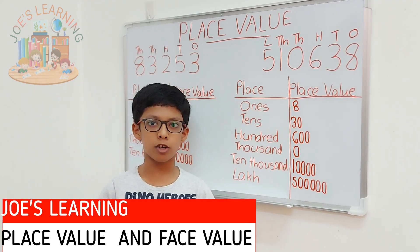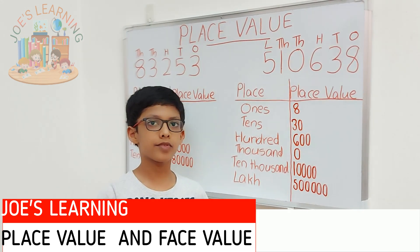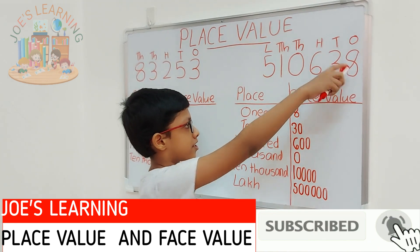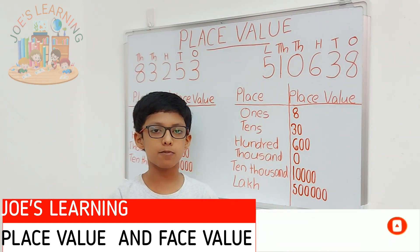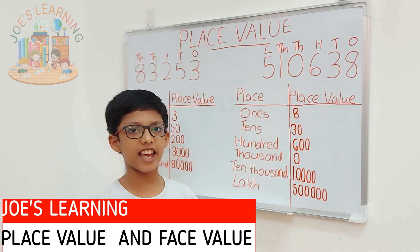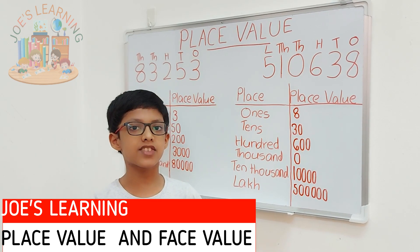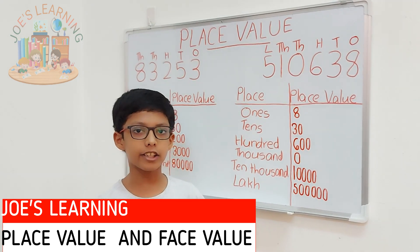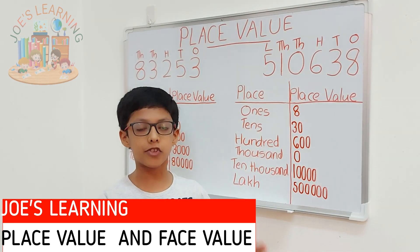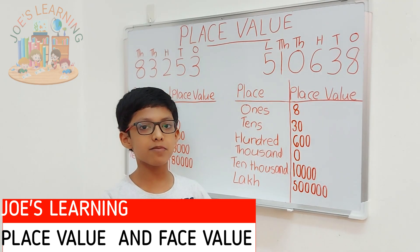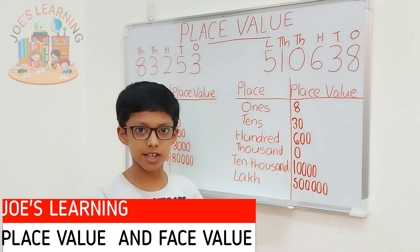Before I move on to the face value, let me tell you something. 8 is in the ones place, right? So, 8 multiplied by 1 is 8. Any number which is in the ones place, its place value will always be that number itself. And 0, whichever position it is in the number, its place value will always be 0. One should always remember these important things.